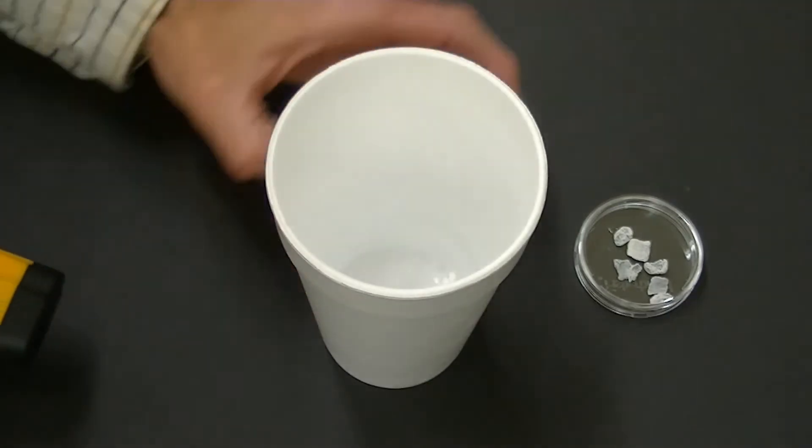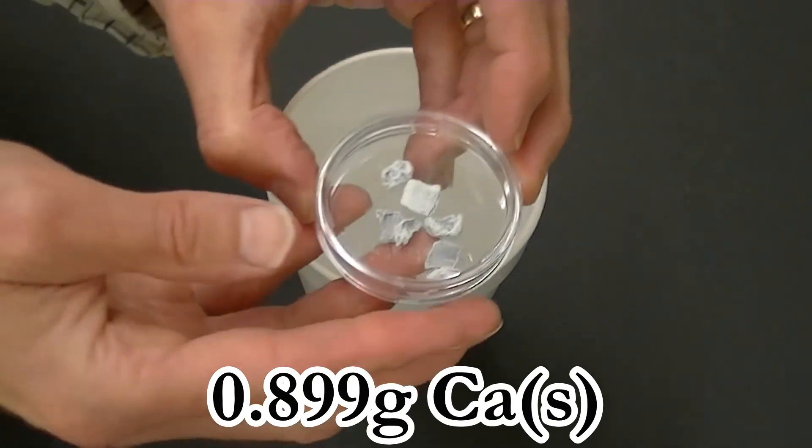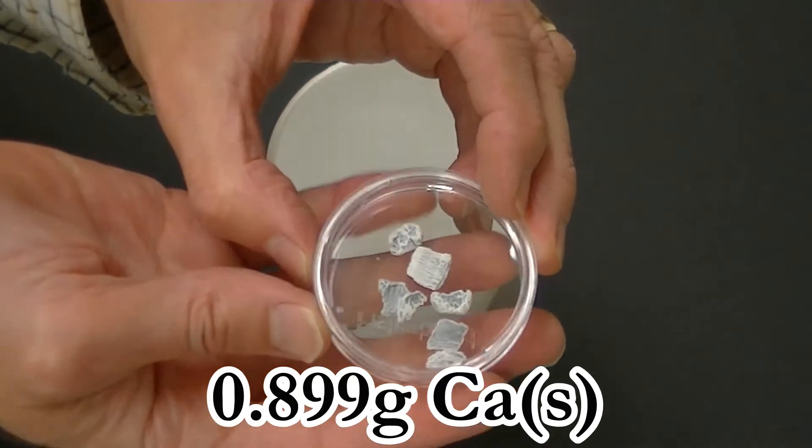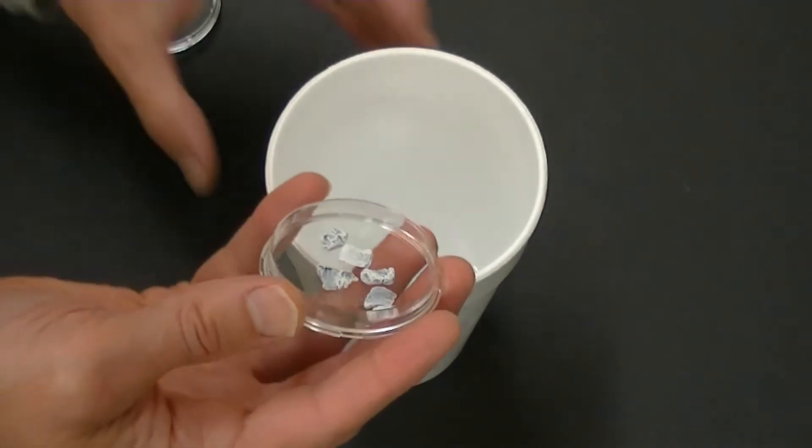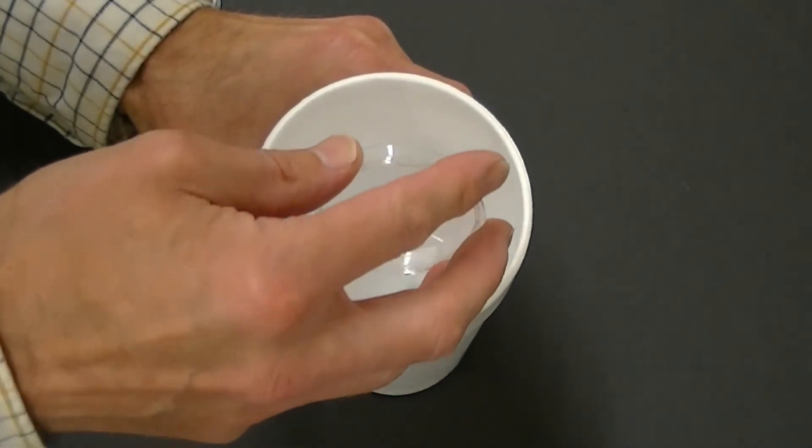Now I'm going to add 0.899 grams of calcium metal. The white color on this mostly gray-colored metal tells me my calcium isn't entirely pure. However, it'll probably work fine for this simple experiment.